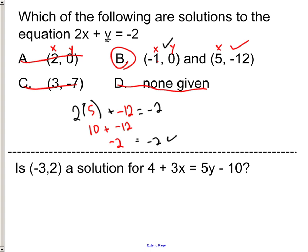(3,-7) would not make it correct, so it's not going to be that one. And since b is correct, it's not going to be d, so the answer to that would be b. So again, when you're not given a graph, just take your coordinates and plug them into the equation, no matter how crazy or weird it is, and just see if it's true.